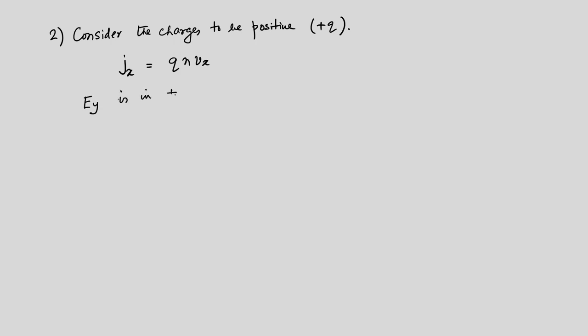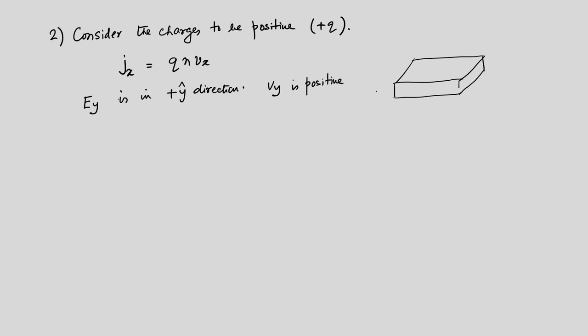In the next case when J_x corresponds to positive carriers, the electric field is in the plus y-direction, and so the Hall voltage is also positive. The positive charges accumulate on one face and the negative charges on the opposite end for charge neutrality. In metals, the charge carriers are mostly electrons, so the Hall voltage is negative — V_y is negative.